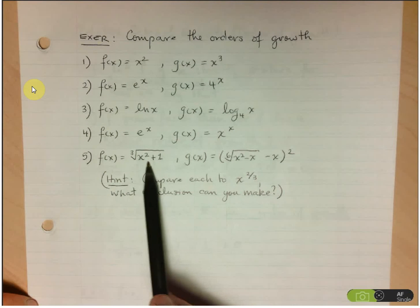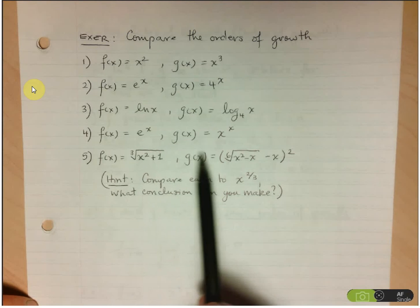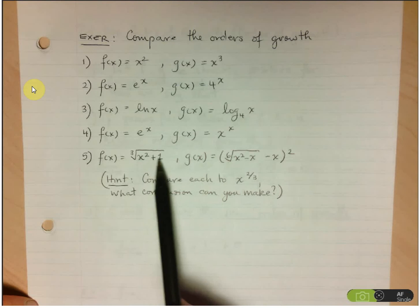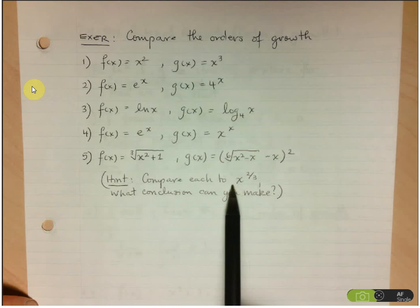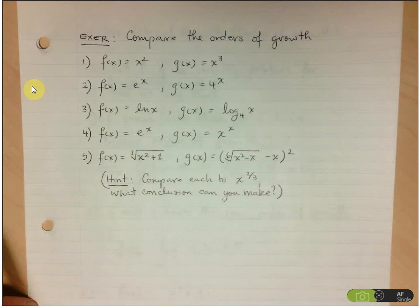Now, this here, this last one, give me a little hint, and this is something we'll look at next time, is instead of trying to compare these two, it might be easier to compare each of them to x to the 2 thirds, and I want you to look at each of the two functions, and why I'm suggesting that you compare it to x to the 2 thirds.